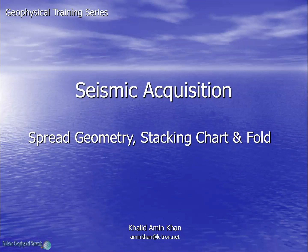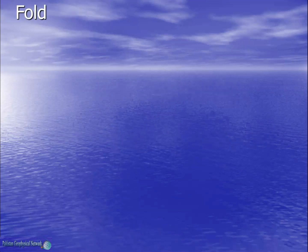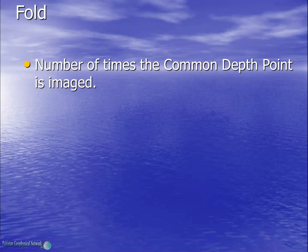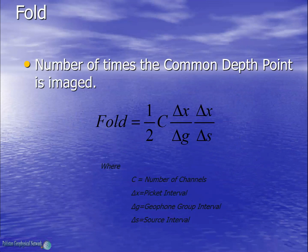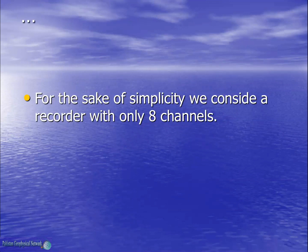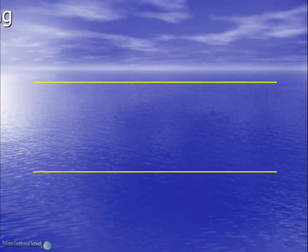In this video we will see how seismic acquisition is carried out, what are the various spread geometries and their resulting stacking chart and fold coverage. First of all, we need to understand fold — it is simply the number of times a common depth point is imaged. It is given by the equation where C is the number of channels, del_x is the picket interval, G is the geophone group interval or receiver interval, and del_s is the source interval. From this equation, if geophones are planted on every picket and shooting is also carried out on every picket, then the terms on the right cancel out and the fold is equal to half the total number of channels. For simplicity, we consider a recorder with only eight channels.